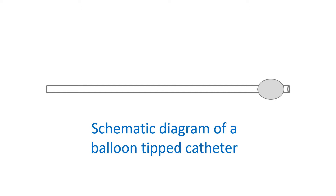Bedside cardiac catheterization can be done using special flow-directed catheters which have a balloon at the tip. When the balloon is inflated while in the right upper chamber of the heart, the catheter takes the course of the blood flow into other chambers. This method is usually used to measure the blood pressure in the pulmonary artery.